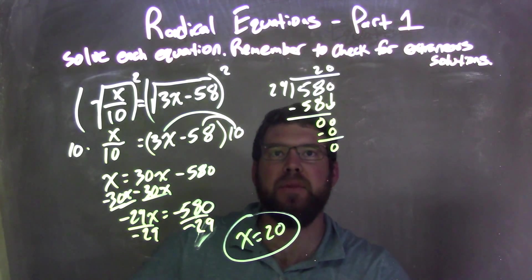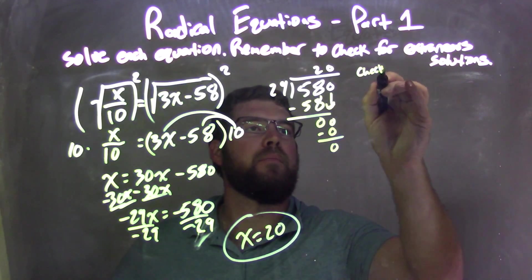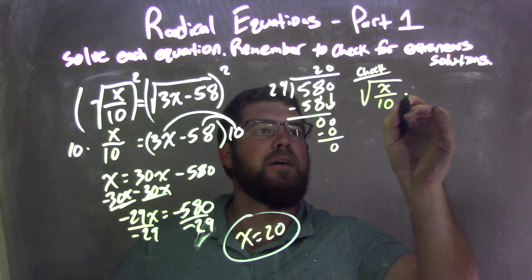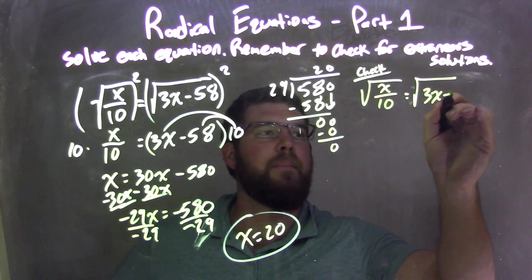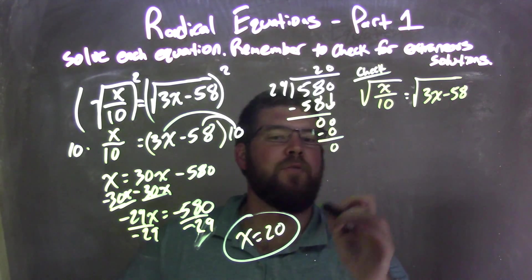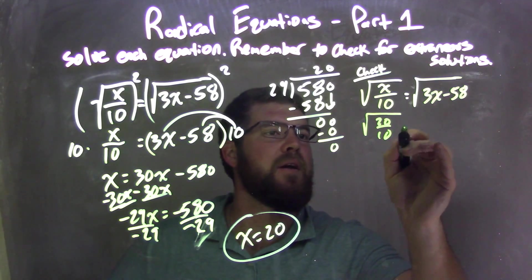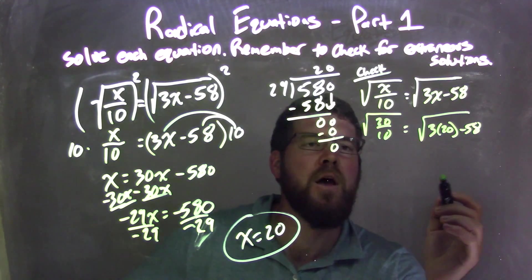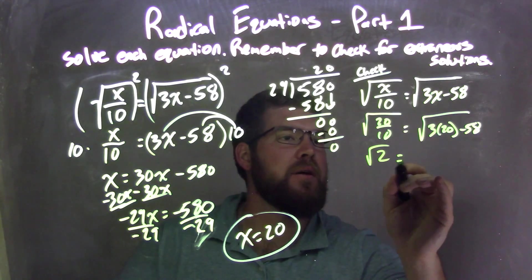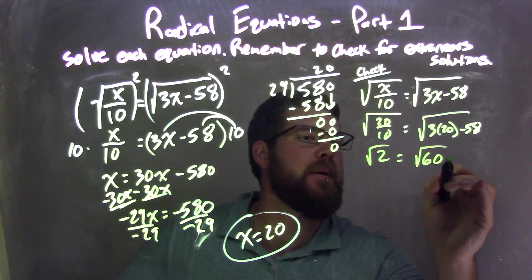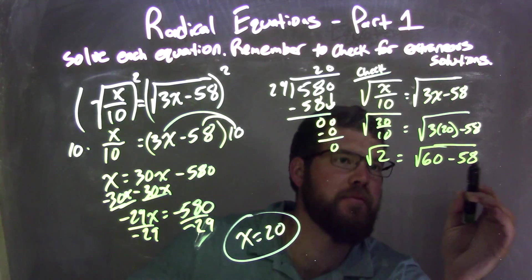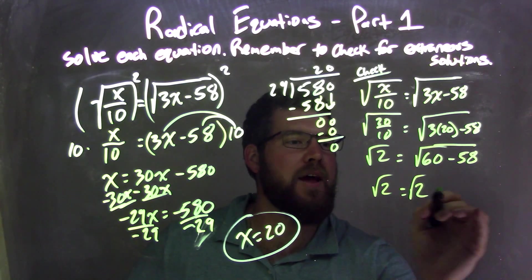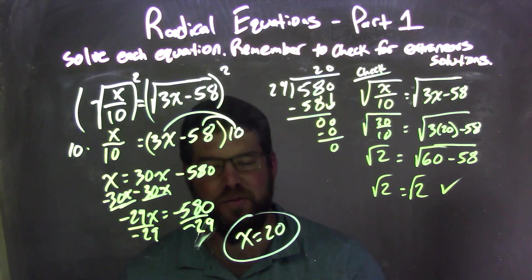But I still have to check it. I rewrite the equation: the square root of x over 10 equals the square root of 3x minus 58, and plug in 20 for both x's. I have the square root of 20 over 10 equals the square root of 3 times 20 minus 58. Well, 20 divided by 10 is 2, so we have the square root of 2 on the left. 3 times 20 is 60 minus 58, and the square root goes over both parts, so 60 minus 58 is 2. We have the square root of 2 on both sides — left and right are equal, confirming x equals 20 is my answer.